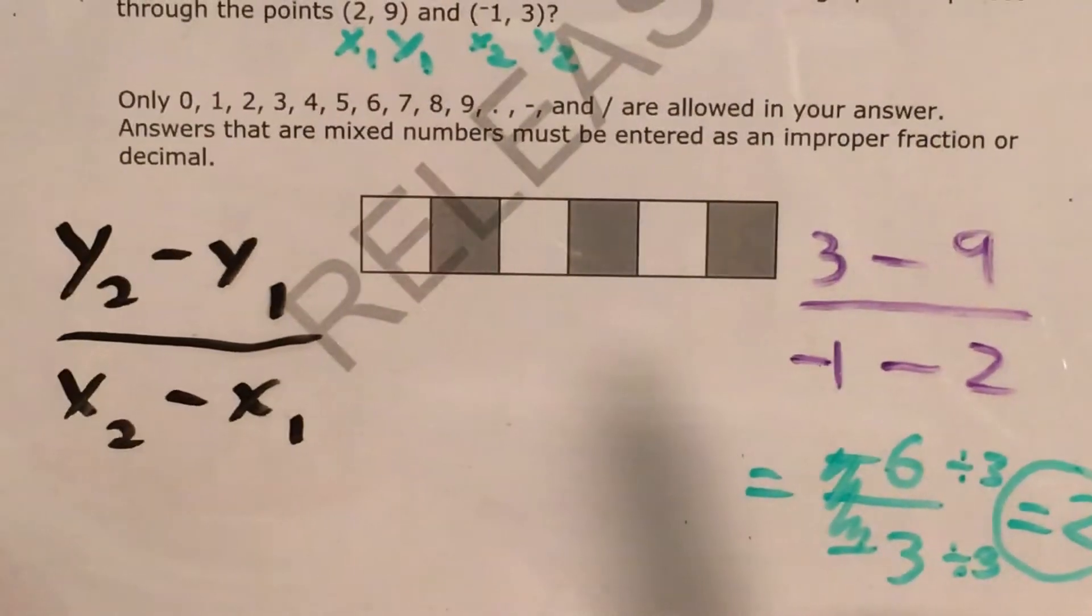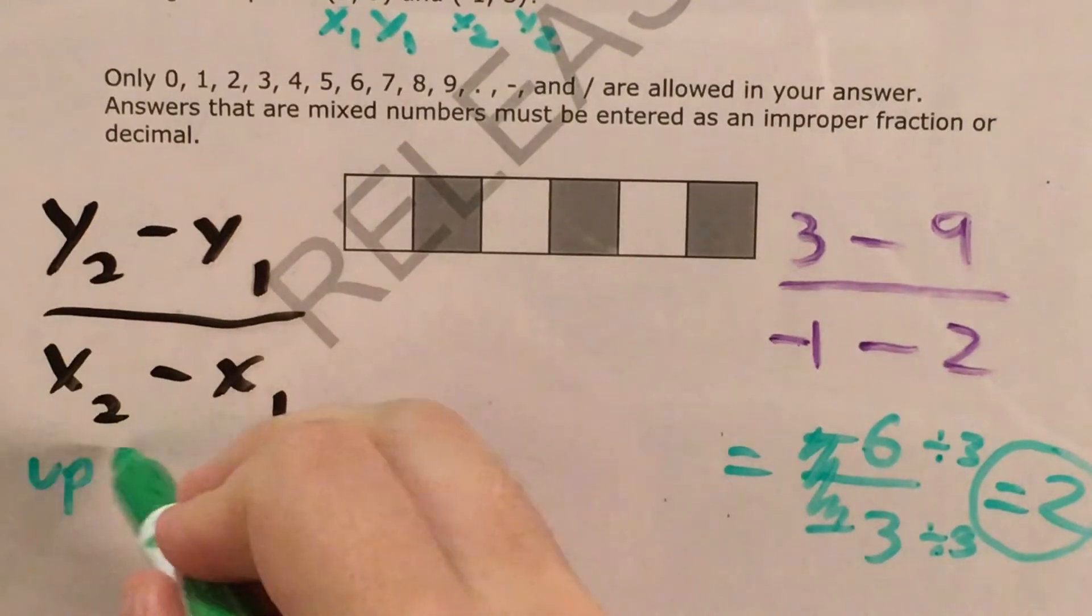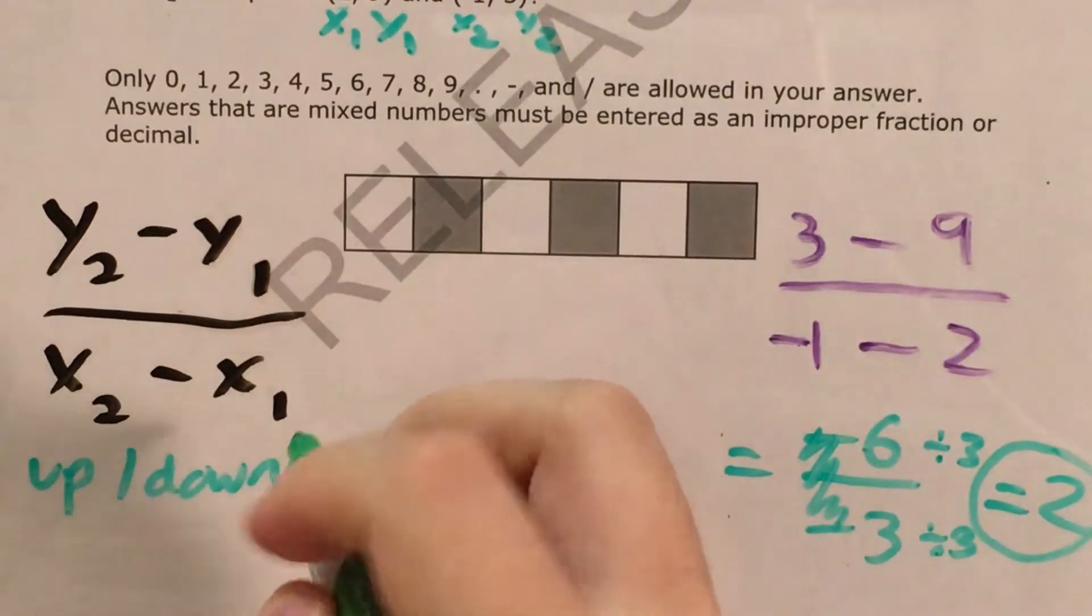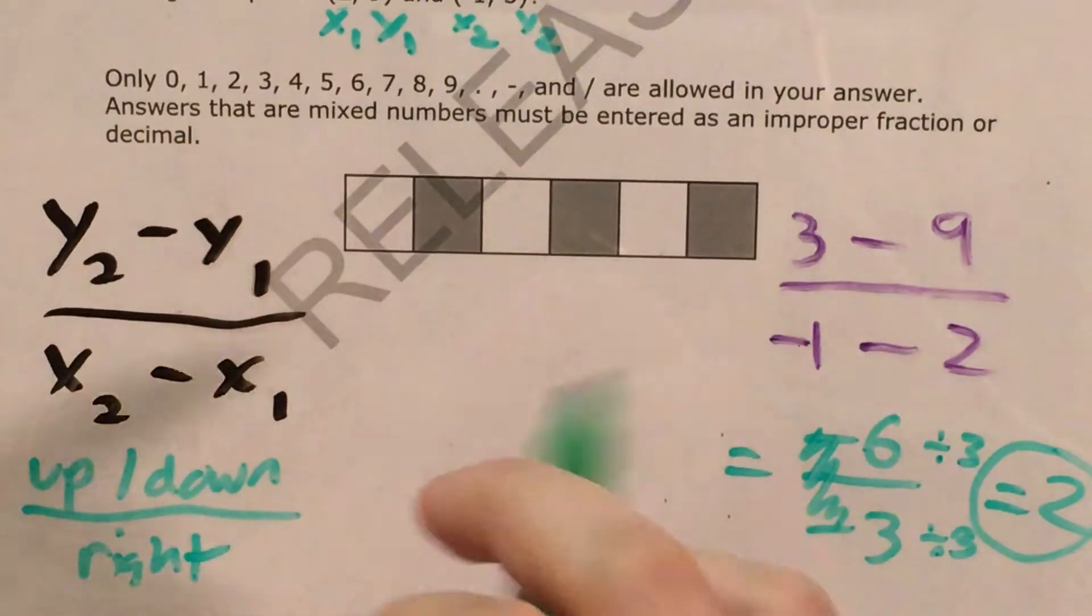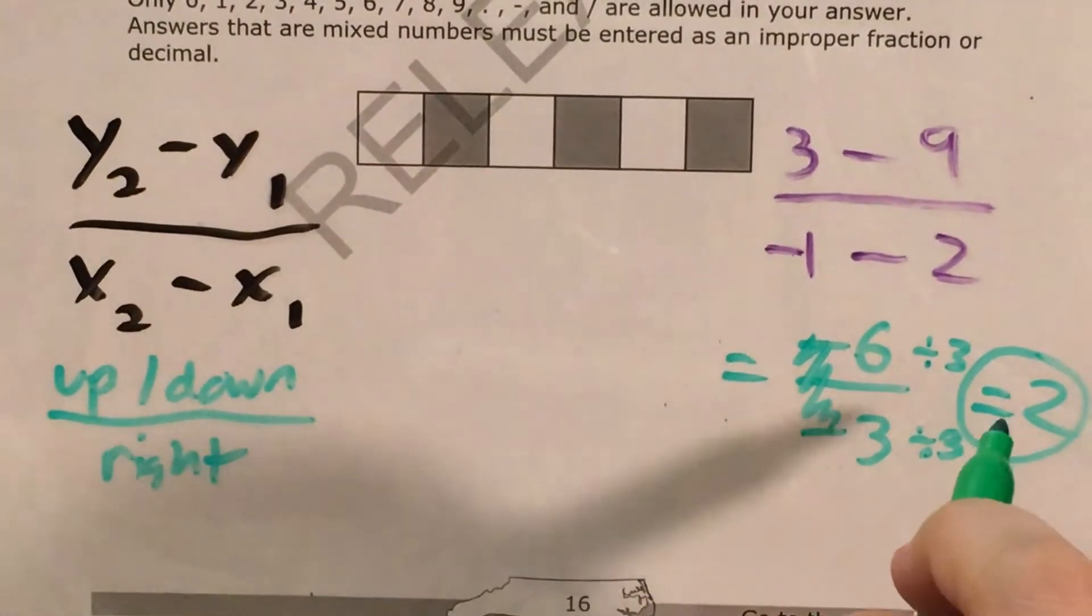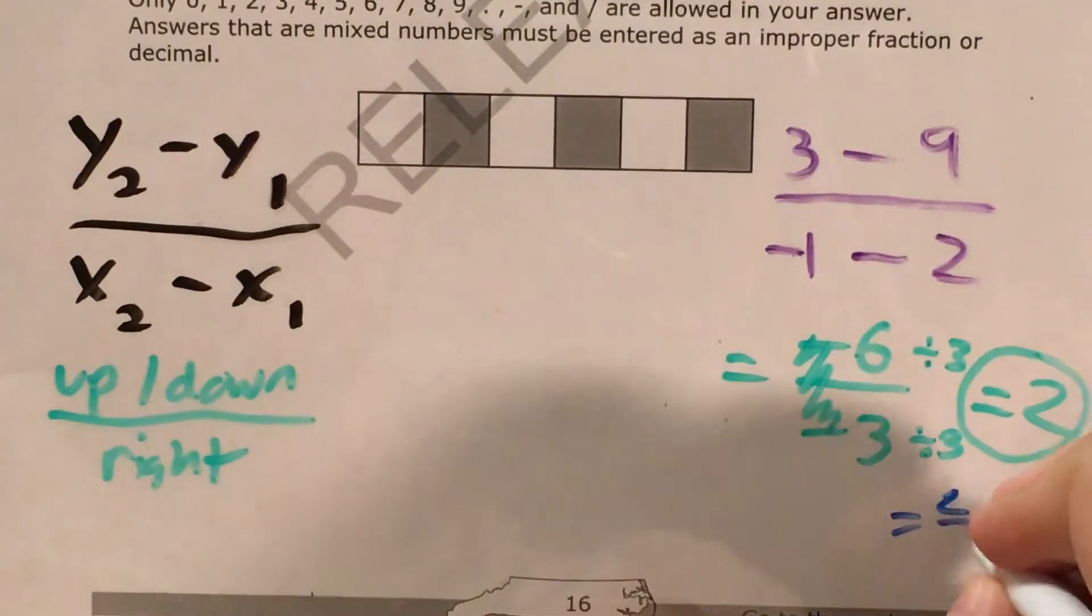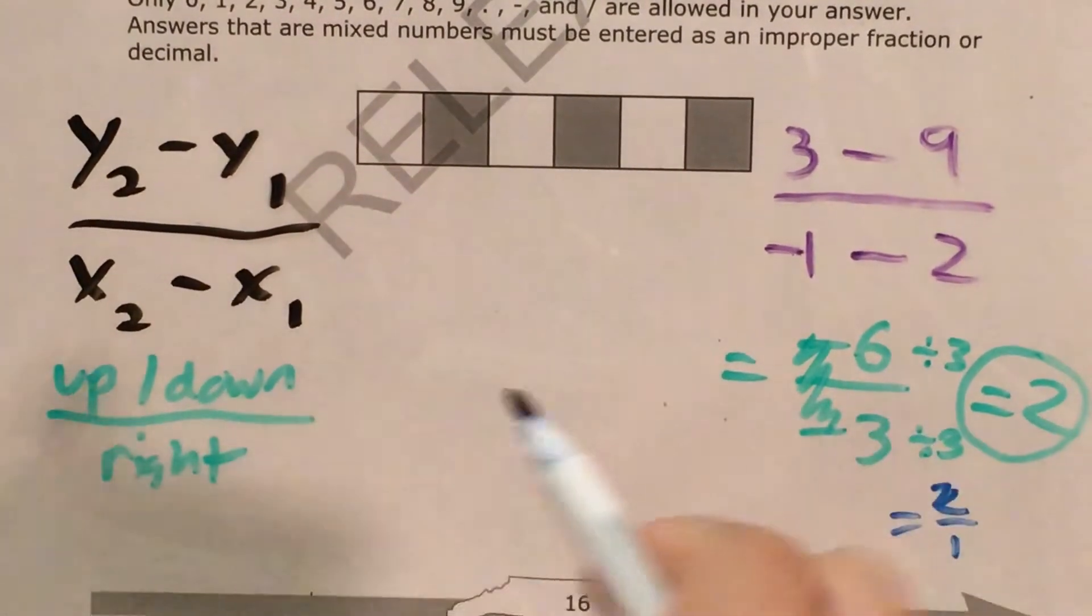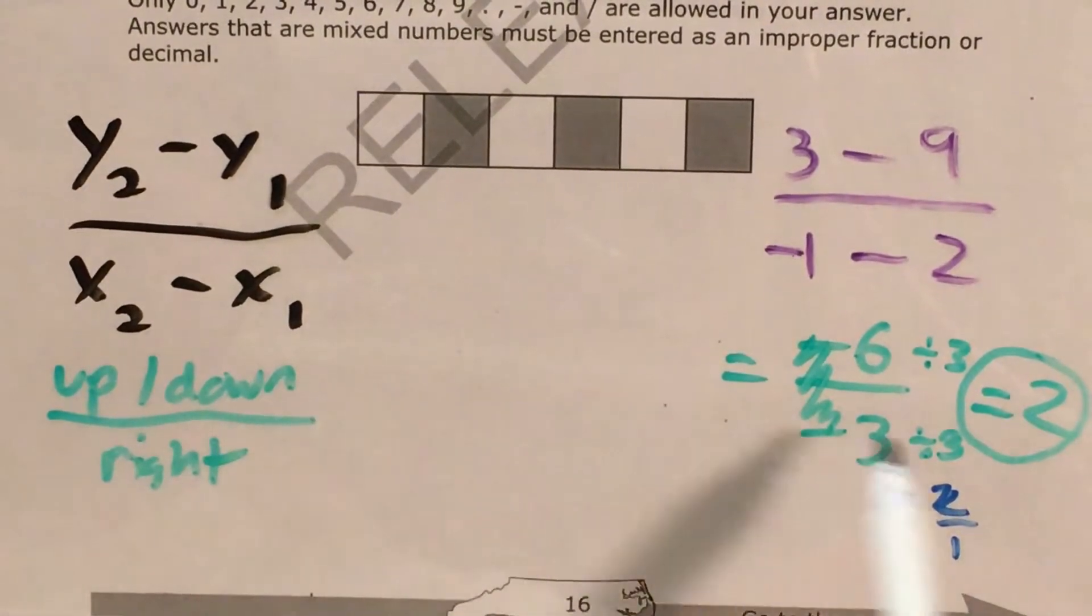Now y'all do know that I like to say that slope is like how far up or down we're going divided by how far right we're going. And in most other cases I would actually take 2 and say that it's actually 2 over 1, because according to this directions way of thinking about slope, this would tell me that I go 2 up for every 1 that I go right.